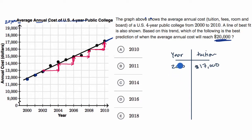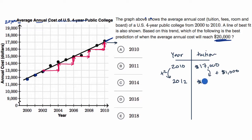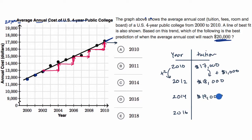So let's add two years at a time. In 2012, tuition goes up by $1,000 to $18,000. Then in 2014, up another $1,000 to $19,000. Then add another two years — 2016 — and tuition goes up by $1,000 again, reaching the magic number. Based on the line of best fit, the average annual cost will reach $20,000 in 2016.